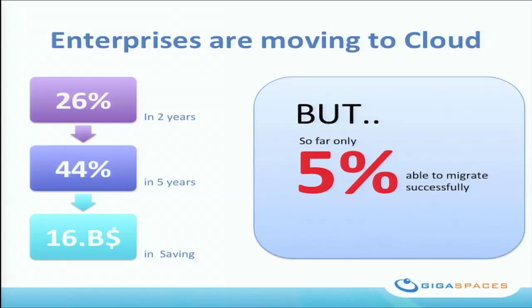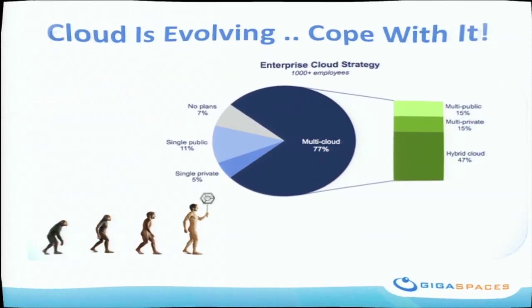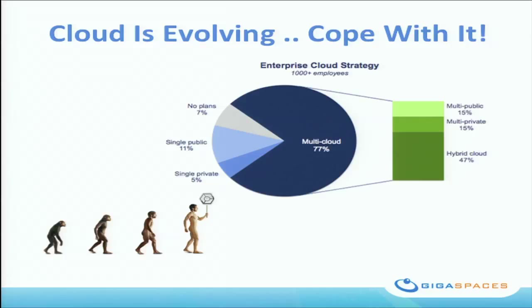The mission we're trying to solve is this: on one hand, we have a lot of enterprises interested in moving to the cloud. On the other hand, they're having difficulties making that move and we're trying to bridge that gap. A recent RightScale survey shows that even enterprises who want to move to OpenStack would still take a hybrid approach — meaning more than one provider, even if they're both OpenStack providers.